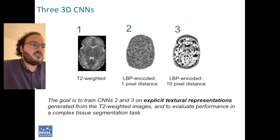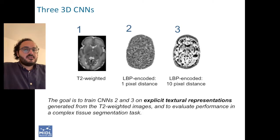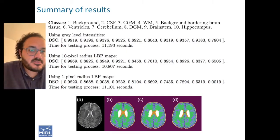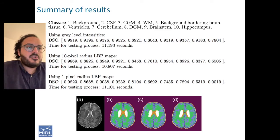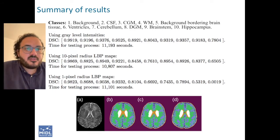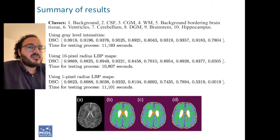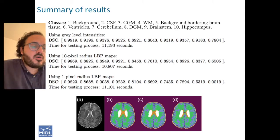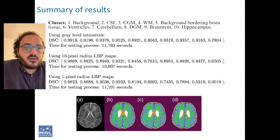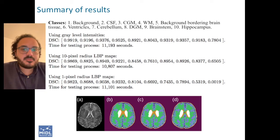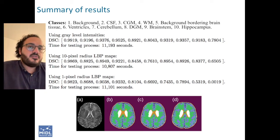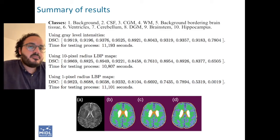Our results show that it is quite possible to achieve a really good segmentation performance using networks that did not see the original T2 images. These networks only saw the textural representations of the images that were explicitly computed using the LBP algorithm, and they achieved strong results.